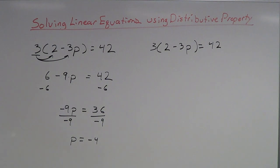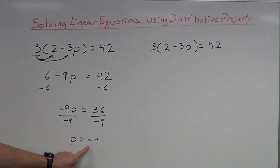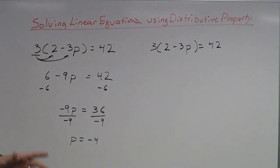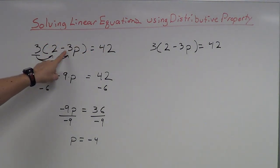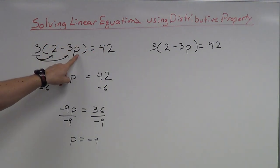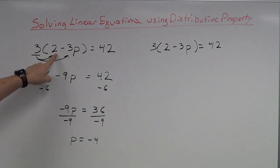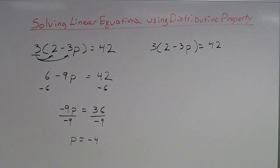Now you can check this if you'd like. What's great about solving equations is you can always take your answer and plug it back into the original equation. So plugging negative 4 back in: negative 3 times negative 4 is positive 12, positive 12 plus 2 is 14, and 14 times 3 is 42. So it works!